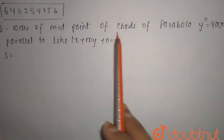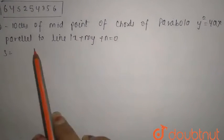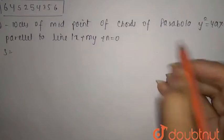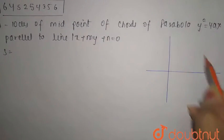Locus of midpoint of chords of parabola y² = 4ax parallel to line lx + my + n = 0. So first of all, what we have given: a parabola. This is your parabola towards the axis, which is y² = 4ax.